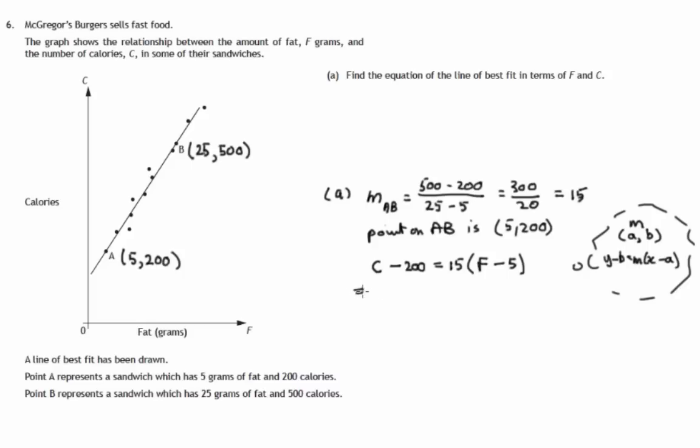So what does that give us? C minus 200, multiplying out 15 lots of F minus 15 lots of 5, that's 75. And let's just add 200 to both sides, that'll disappear.